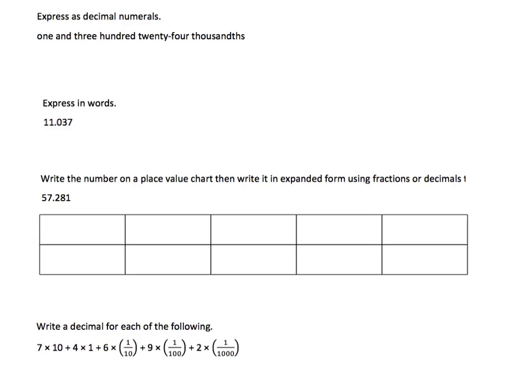It's important to remember that 'and' tells you where the decimal point is going to be. So this number reads 1 and, so it would be 1 decimal 324 thousandths. And to make sure that this number is correct, I need to remember that thousandths is 3 place values after the decimal point.